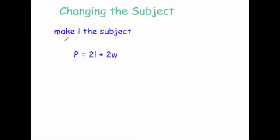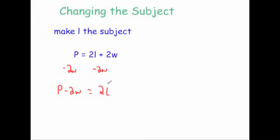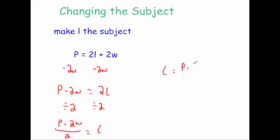The last example says make l the subject where p equals 2l plus 2w. We want to get l on its own on the right hand side. First get rid of the plus 2w by subtracting 2w from both sides, giving p minus 2w equals 2l. Then to get rid of the times by 2, divide both sides by 2. The left hand side gives p minus 2w over 2, and the right side leaves just l. So l equals p minus 2w over 2.